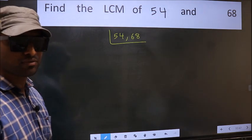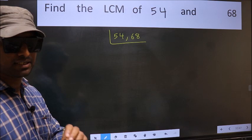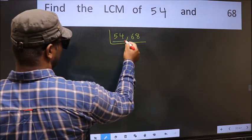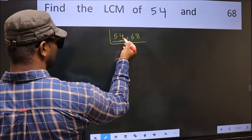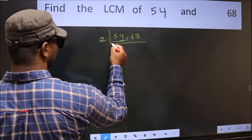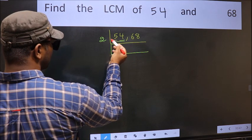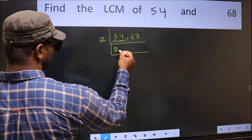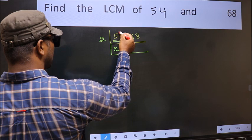Now you should focus on the first number, which is 54. For this number, the last digit is 4, so take 2. The first digit is 5. A number close to 5 in the 2 times table is 2×2=4. So 5 minus 4 equals 1.